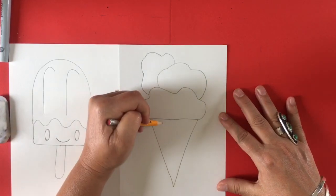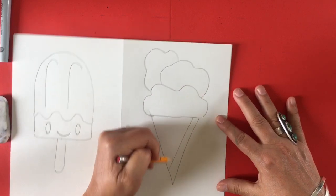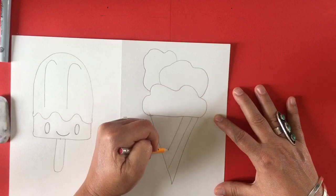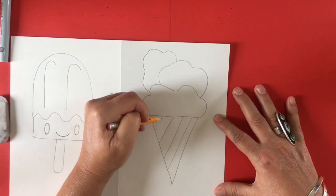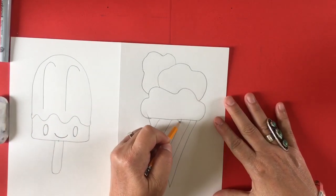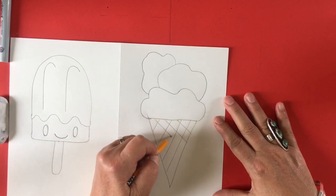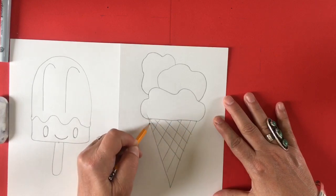Now I'm going to give my cone some texture and some pattern. We're going to make diagonal lines that are parallel to the edge, meaning the same angle. You're just going to make rows of lines going one way. Then you're going to make rows of lines going the other way. This is making that cone look like it's got texture on it.